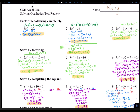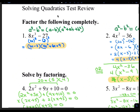Welcome again, everyone. This video covers the solving quadratics test review. Let's start with number one. It says factor completely. We have 8x to the third minus 27, and that can be written as 2x raised to the third power minus 3 to the third power, which means it follows the difference of cubes formula.